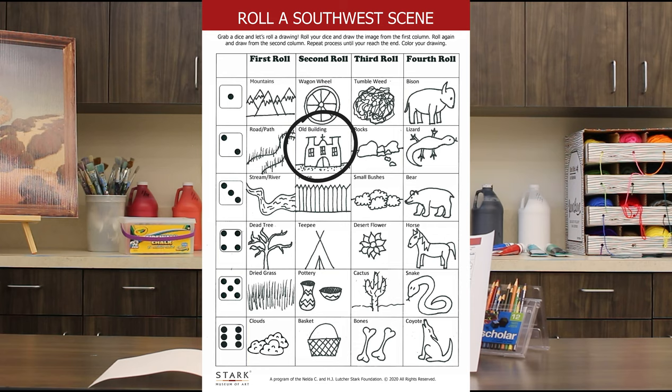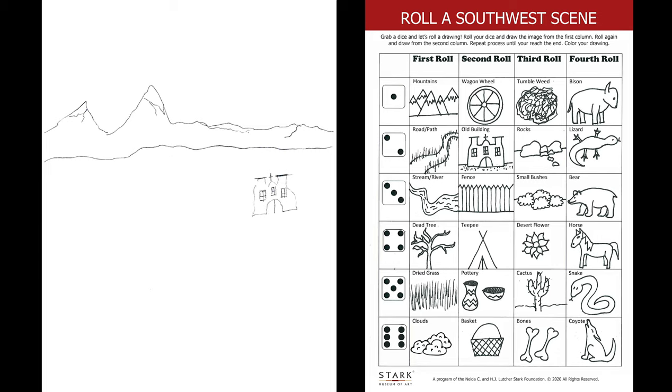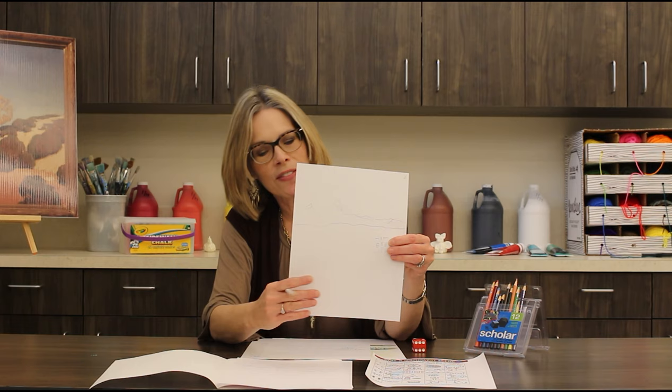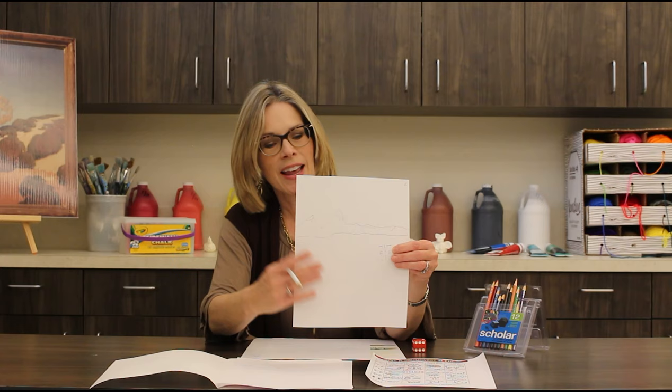We're going to roll again. I rolled a two, so I look at the second column — it's the old building. I need to draw an old building into my drawing. I placed my building in the middle ground, way off in the distance. If I was standing near this place, I would have to walk a long distance to get to that building. If I put my building down here in the foreground, I would draw it much larger — that would show it is very close. You're going to think about where you want things to be, because you don't want every element the same size or your landscape won't have a sense of depth.